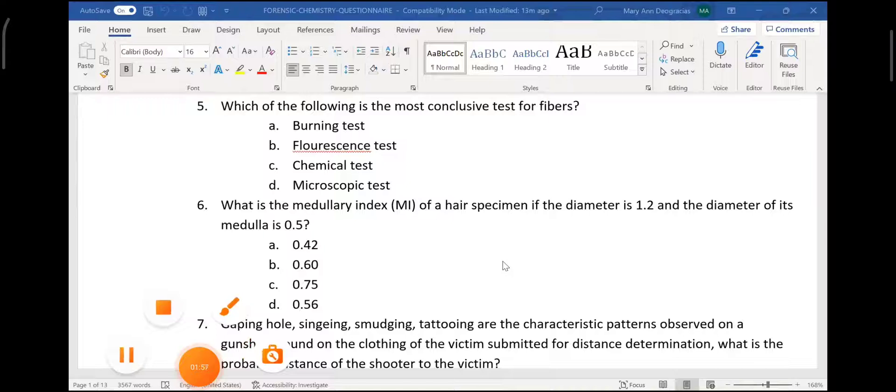The burning test tells us whether it is animal or vegetable fiber, or mineral fiber. The fluorescence test also determines the general group of the fiber.